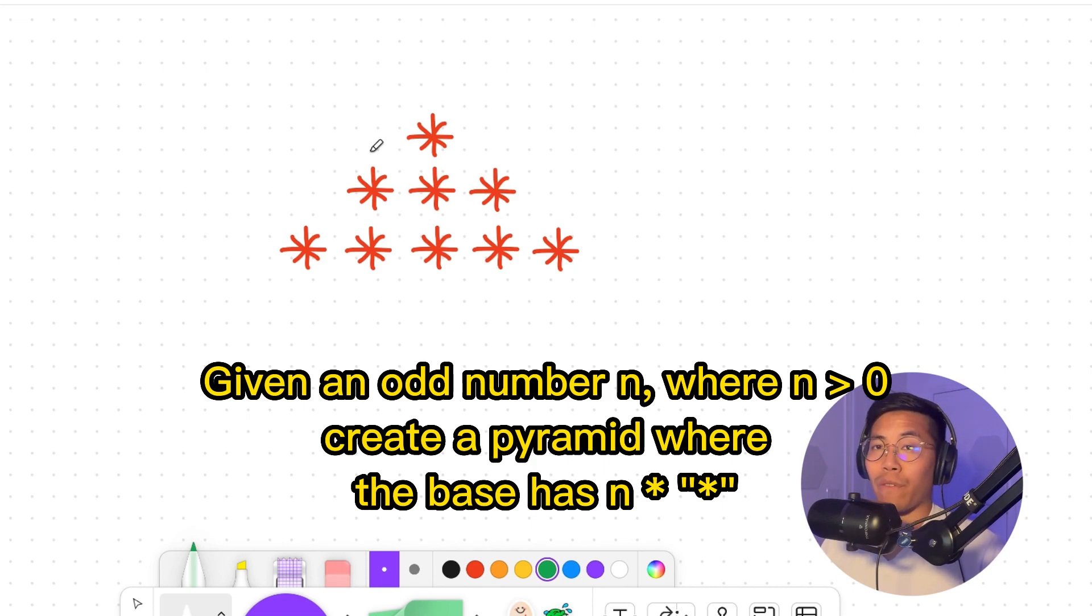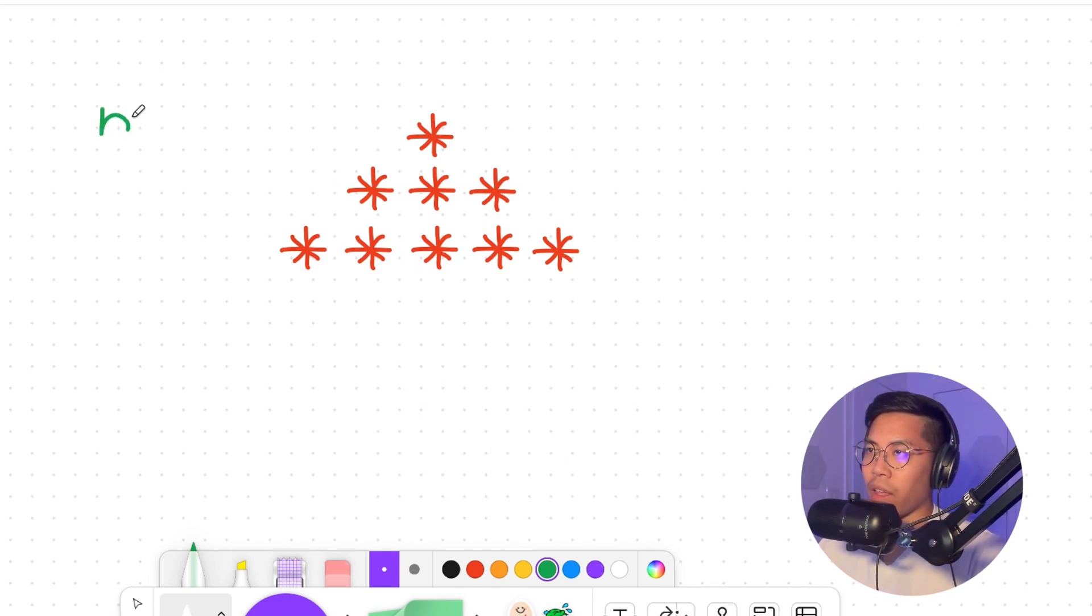Before we write any code, the first thing you should do is try to understand the problem and try to find a pattern. So if you look at this pyramid here, we have n equals five, which means that the base will have five stars in total. And in the row above it, you're going to have three stars. And then in the first row, you're going to have one star.